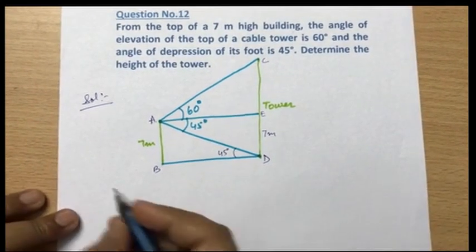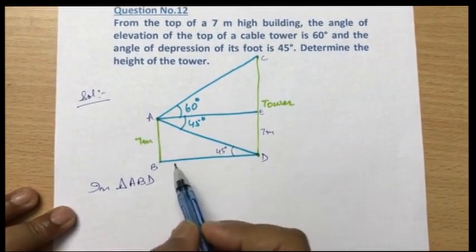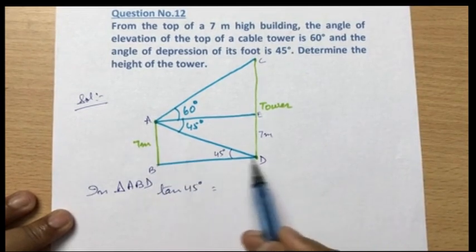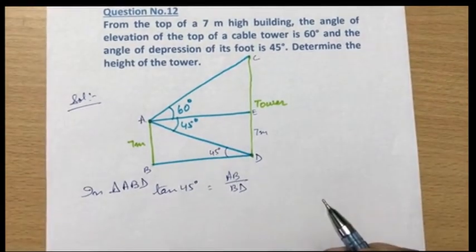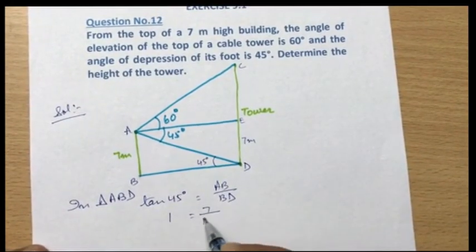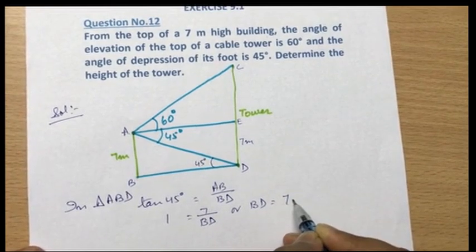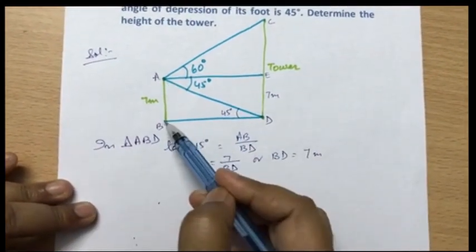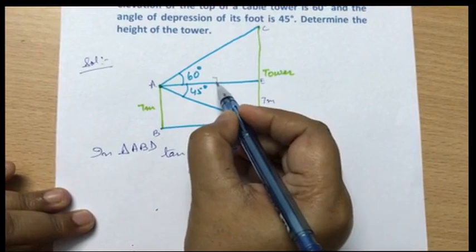In triangle ABD, tan 45 degrees equals AB by BD. Tan 45 is 1, so 1 equals 7 by BD, which gives BD equals 7 meters.